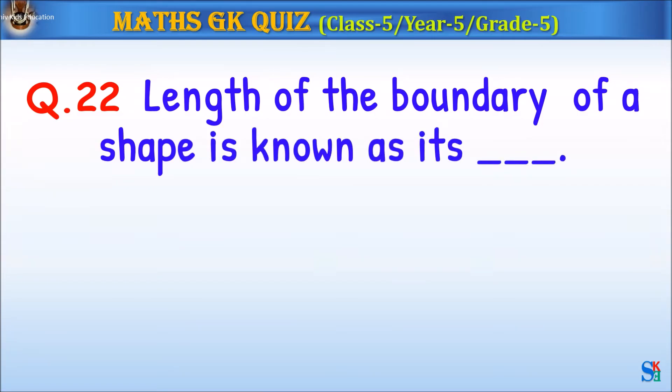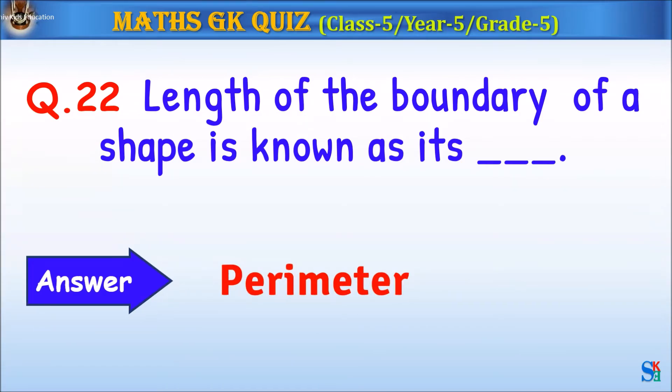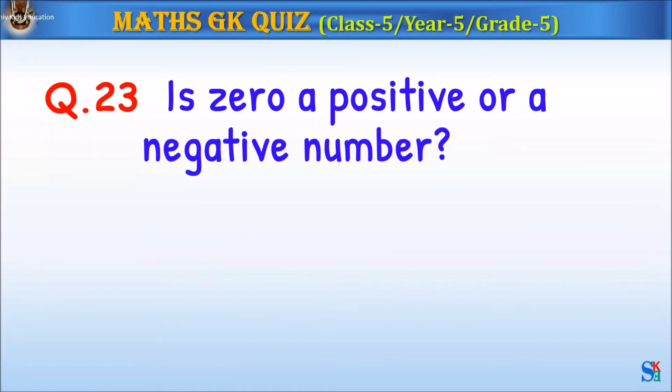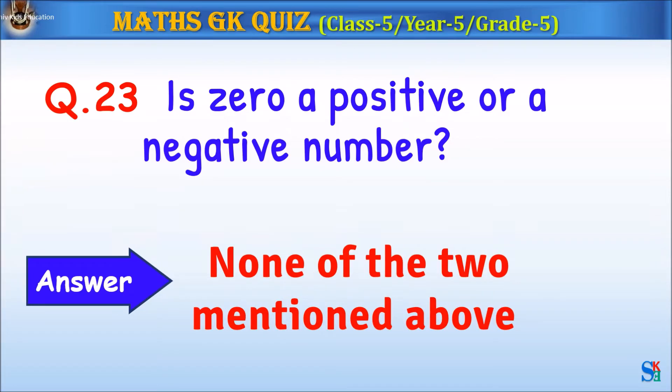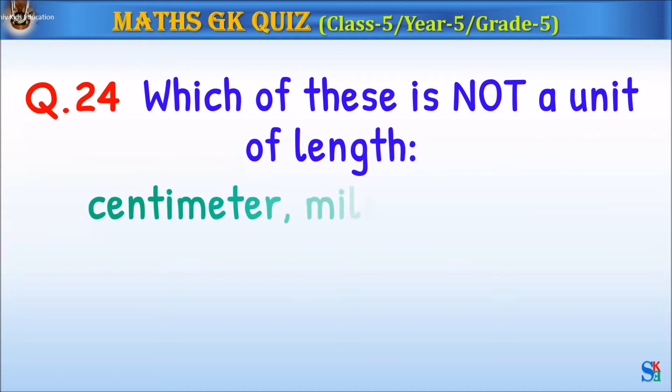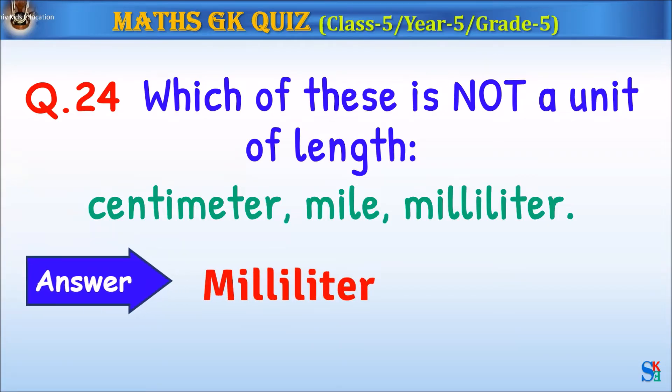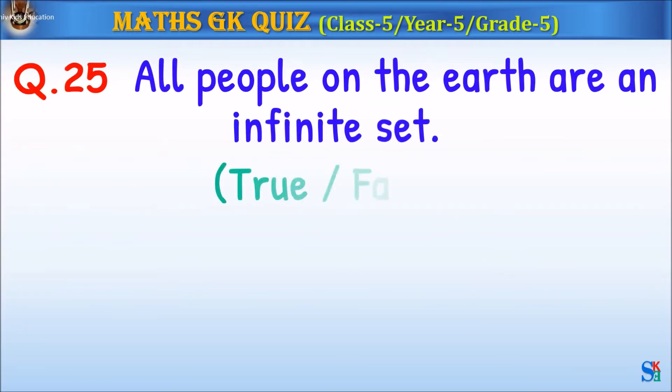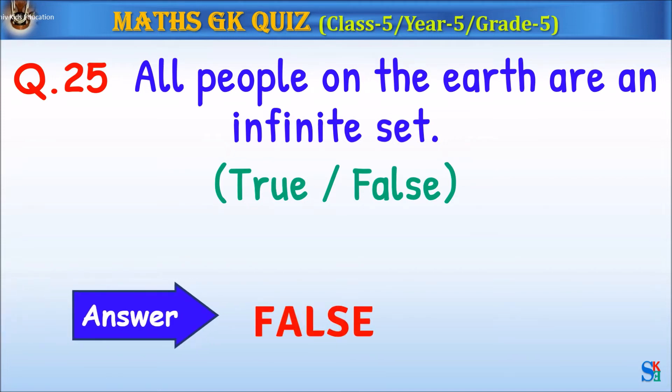Question 22: The answer is perimeter. Question 23: Is zero a positive or a negative number? The answer is none of the two mentioned above. Question 24: Which of these is not a unit of length? The answer is milliliter. Question 25: All people on the earth are an infinite set, true or false? The answer is false.